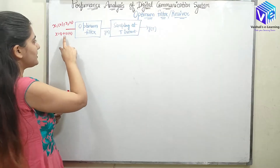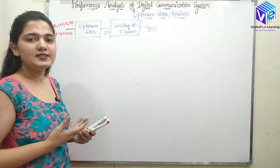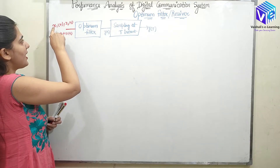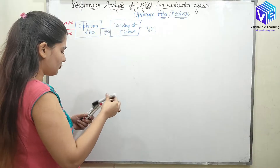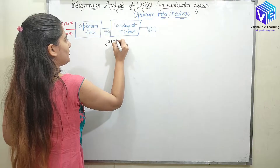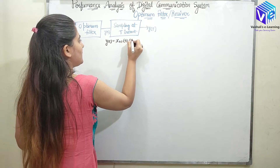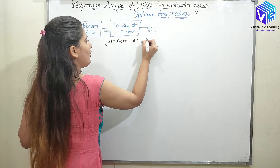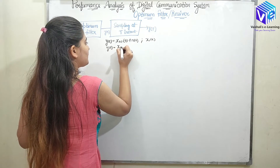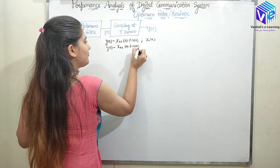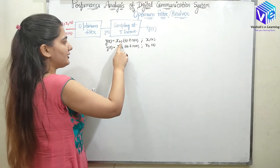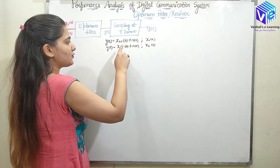The input is X(T) plus N(T) — we are seeing the performance in the presence of noise. We are taking two inputs, X1(T) and X2(T), so Y(T) would be the output. Y(T) equals X-naught-1(T) plus N(T) for input X1(T), and Y(T) equals X-naught-2(T) plus N(T) for input X2(T). So now we have two outputs: X-naught-1 plus N, and X-naught-2 plus N.